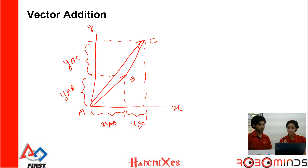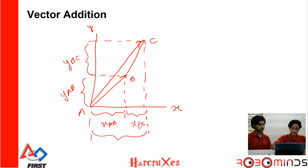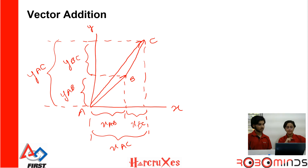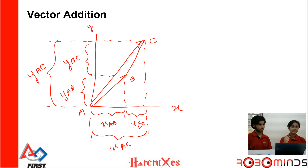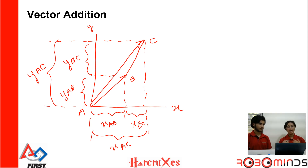If you draw the components of vector AC, you will find that x_AC equals x_AB plus x_BC, and y_AC equals y_AB plus y_BC. So when adding vectors, you can resolve them into their x and y components, add the x components together and the y components together separately, and the resulting x and y values give you the components of the resultant vector.